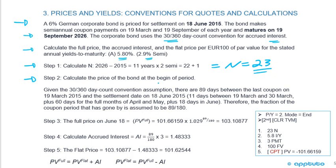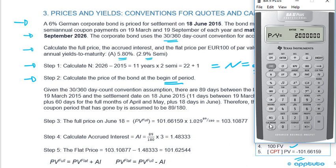Step two: calculate the price of the bond at the beginning of the period using time value of money on the calculator. Set P/Y = 2 (semi-annual), N = 23, I/Y = 5.8, PMT = 3 (since 6% semi-annually = 6÷2), FV = 100. Computing the present value gives 101.66159.